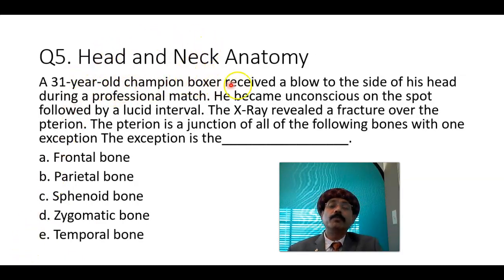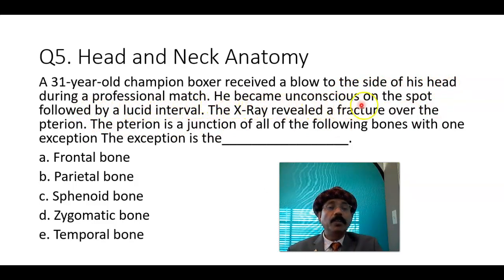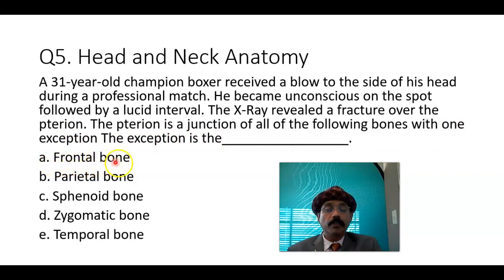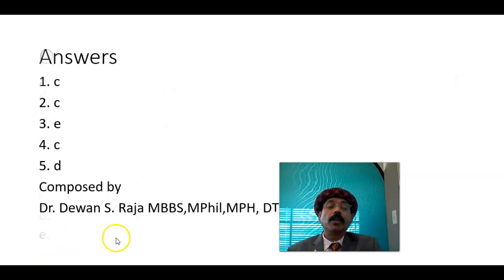A 31-year-old champion boxer received a blow to the side of his head during a professional match. He became unconscious on the spot, followed by a lucid interval. The X-ray revealed a fracture over the pterion. The pterion is a junction of all of the following bones with one exception — what is the exception? Frontal bone, parietal bone, sphenoidal bone, zygomatic bone, or temporal bone?